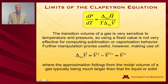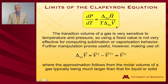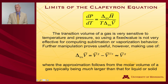Let's look next at the Clausius-Clapeyron equation. The Clapeyron equation has certain limitations associated with it. In particular, the transition volume of a gas is actually extremely sensitive to both temperature and pressure. So using a fixed value for that quantity — the transition volume — is not particularly useful when you're asking about a change that will cover a certain range of temperatures or pressures.